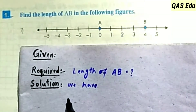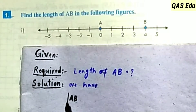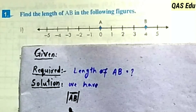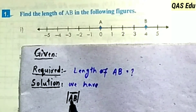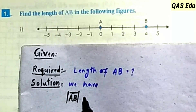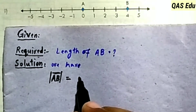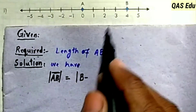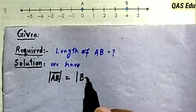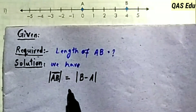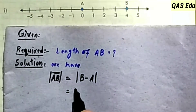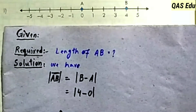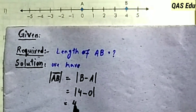We have to explain that AB is absolute — this is the absolute value sign — because our length is positive. AB is the absolute value of the distance: final point minus initial point. The B point is the final point. B is at position 4 and A is at position 0.